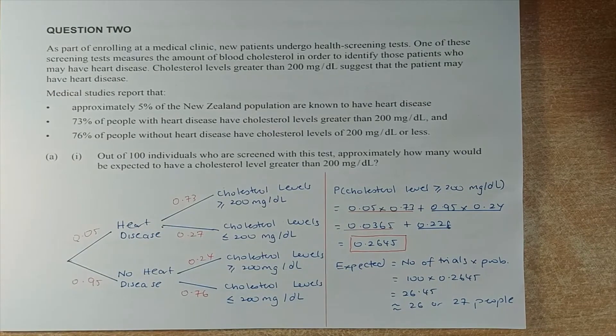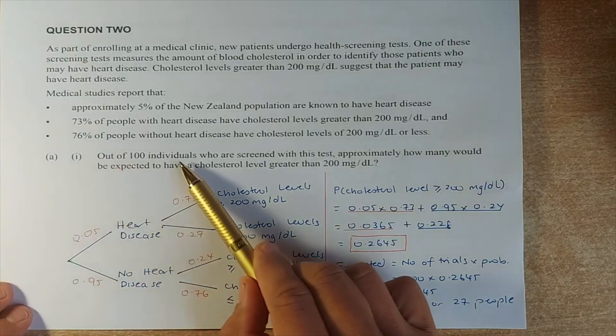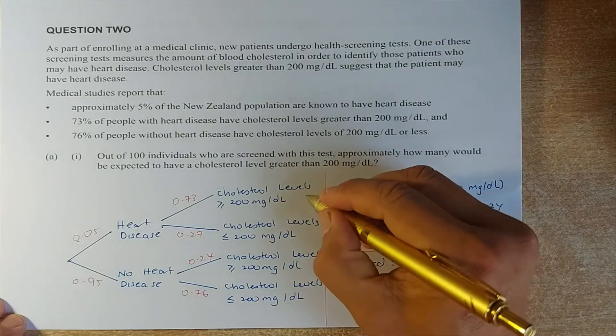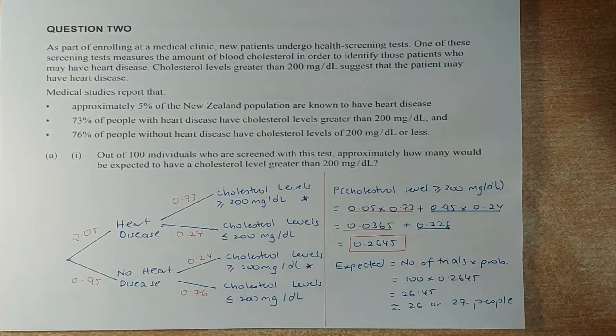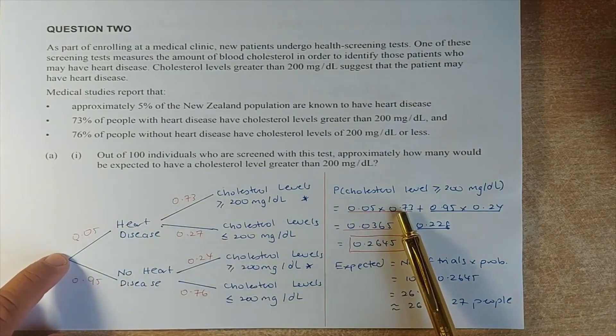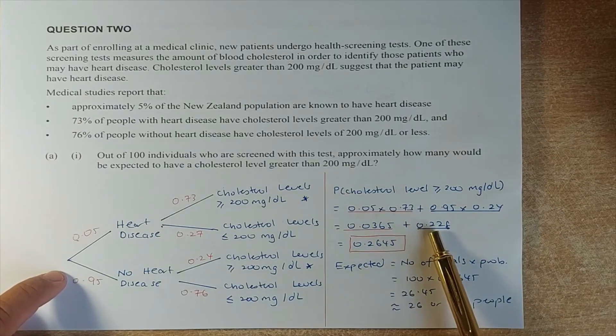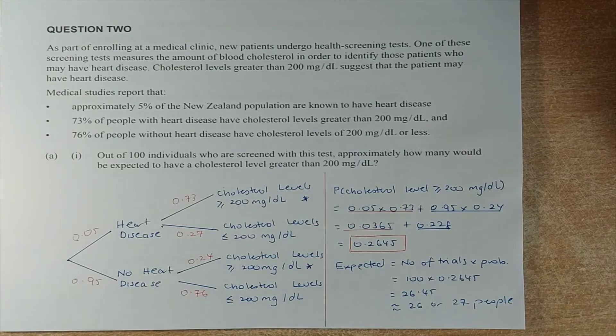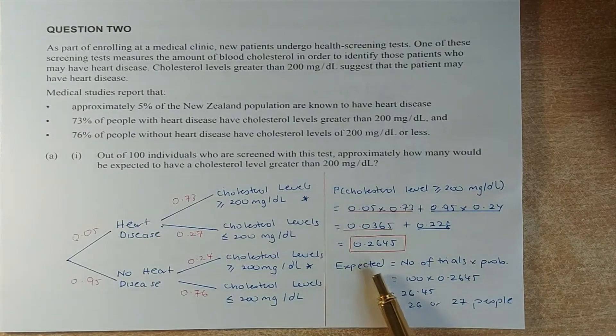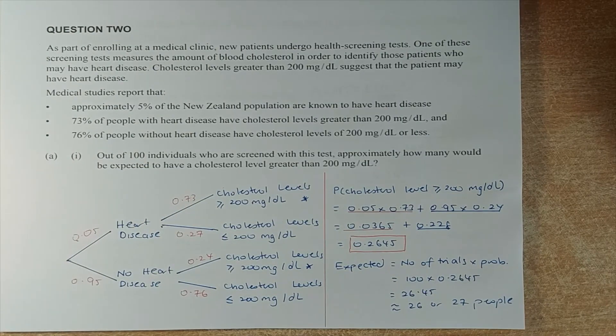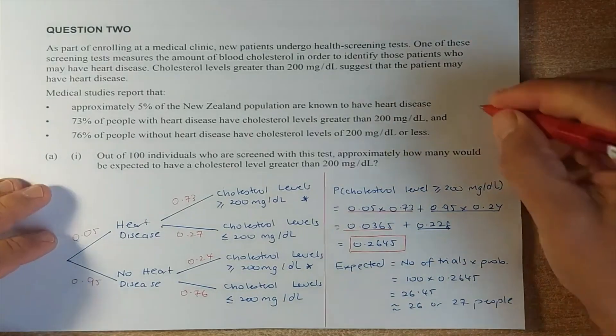Once you have done the probability tree, it's very simple and we are going to calculate the probability. They say out of the 100 individuals who were screened from the test, approximately how many would you expect to have a cholesterol level greater than 200? So we are looking at this cholesterol more than 200 and cholesterol more than 200. So what you do, just like level 1 and 2, you multiply the probability that leads to it. So you take 0.05 times 0.73, it's 0.0365, add with 0.95 multiplied by 0.24 and that is 0.228. Add them up together, it's 0.2645. That is not good enough because you need to calculate the expected value. Expected value is number of trials times probability. So there are 100 individuals times the probability, give you 26.45 but you cannot have 26.45 so it might be a whole number. According to the marking schedule, you can accept both 26 or 27 people and that will give you an achieve in question 1.